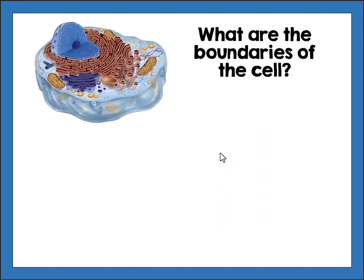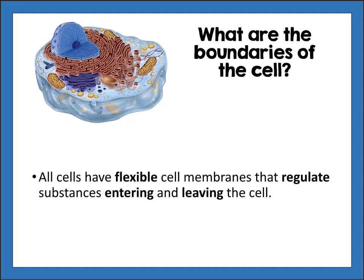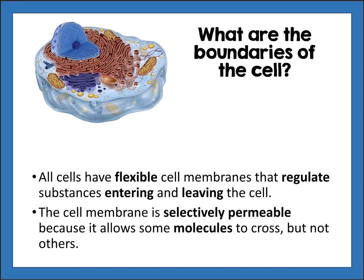All cells have a flexible cell membrane that regulates substances entering and leaving the cell. The cell membrane is selectively permeable because it allows some molecules to cross but not others. It is also called the plasma membrane, and selectively permeable and semi-permeable are interchangeable terms.